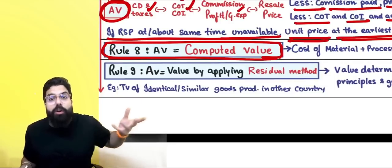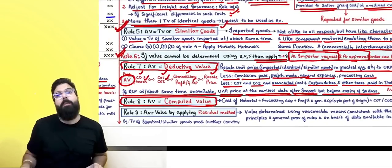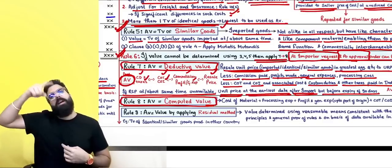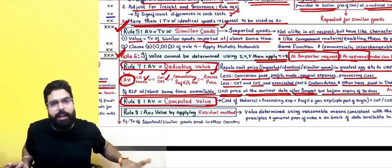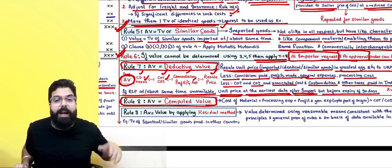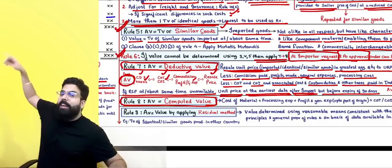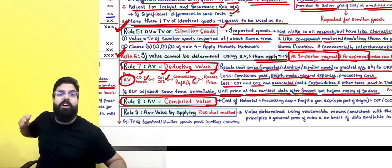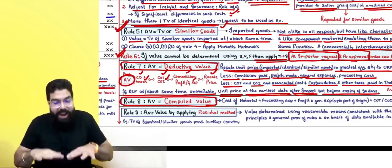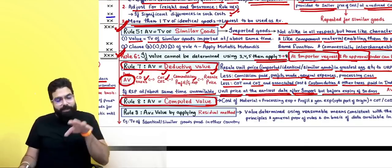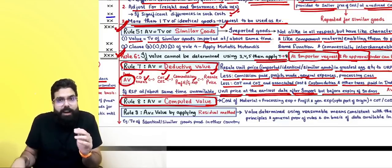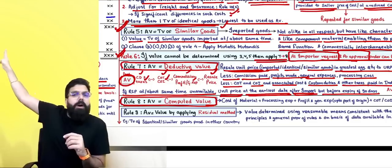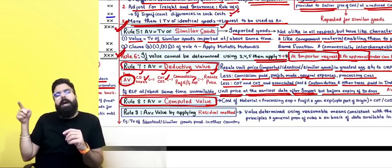If India's resale price is not available at or about the same time, the officer will wait up to 90 days — the unit price at the earliest date after importation but before expiry of 90 days. Rule 8 talks about computed value. The officer computes the value: for example, if a parent company sent goods that are not sold in India anywhere, Rule 7 can't be applied. In that case, take their cost of manufacturing, processing expense, profit, general expenses, and cost of transportation and insurance to arrive at the Indian port value.